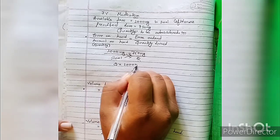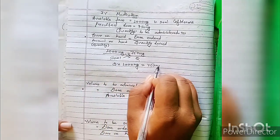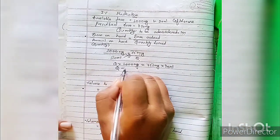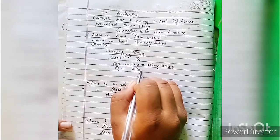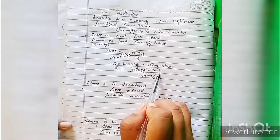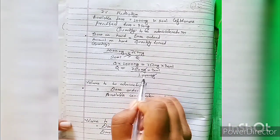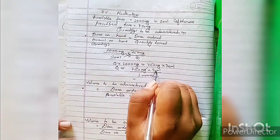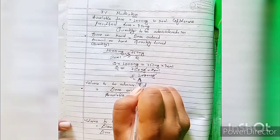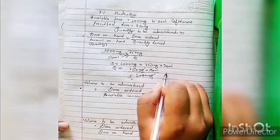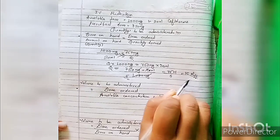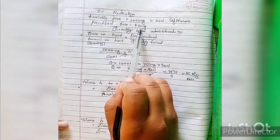Cross multiplying: Q × 1000 mg equals 750 mg × 20 mL. Simplifying — cancel zeros — 75 divided by 5 equals 15 mL. So the answer is 15 mL. Our answer: a 750 mg dose requires 15 mL.